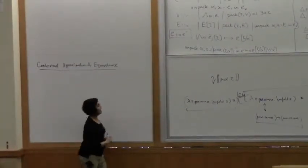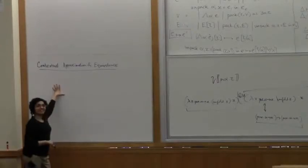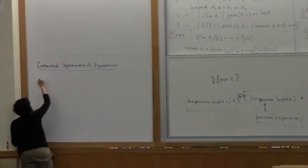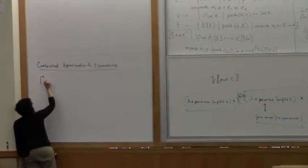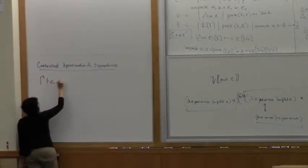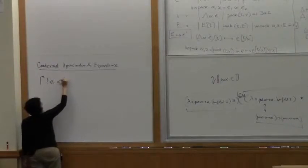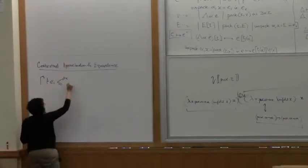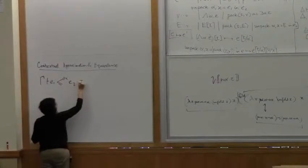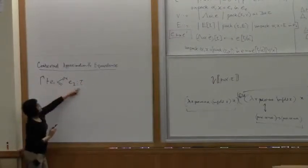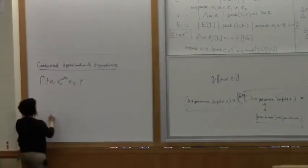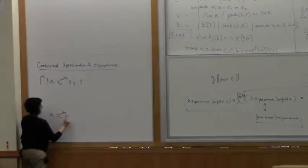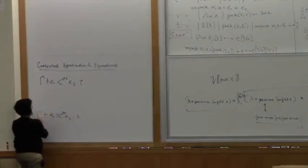We have non-termination in our language, so let's go back to contextual approximation and equivalence. We have polymorphism in our language now. Today I want to split it up into two phases and first define a notion of contextual approximation. If E1 has type tau under gamma and E2 has type tau under gamma, then we say that E1 contextually approximates E2.